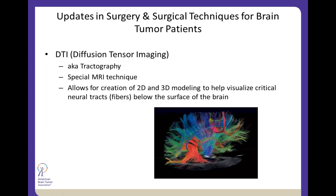A very impressive tool is called DTI, or diffusion tensor imaging, also known as tractography. This takes raw data from the MRI machine and allows us to create two- and three-dimensional models of the subcortical structures. The MRI can give us a good sense of the gray matter and cortex, but DTI can actually derive where the deep projections are relative to the tumor — particularly fibers dealing with speech or motor tracts. This can really change the way you approach a tumor to avoid those critical structures.